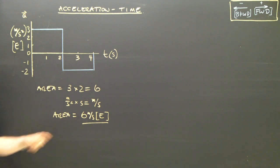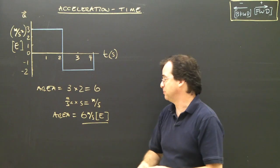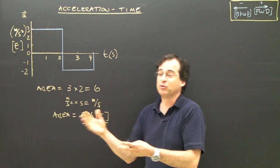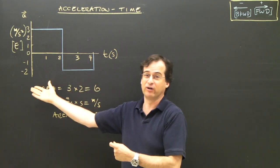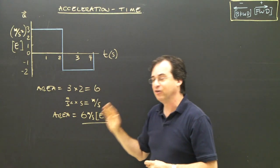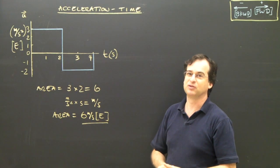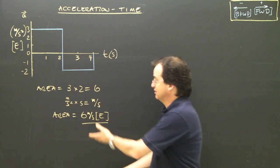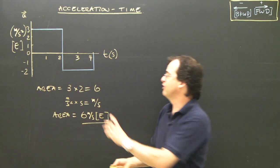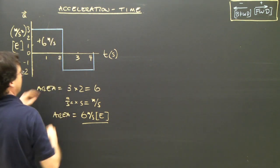So what does that mean? In the first two seconds I've increased my speed. It doesn't necessarily mean I'm going six meters per second east — we don't know what the object was doing before according to this graph. It's not a velocity-time graph, so it doesn't tell us what its original speed was. But all I know is whatever my speed was, I've increased it by six meters per second towards the east. So if the object was at rest, now it would be going six meters per second east.